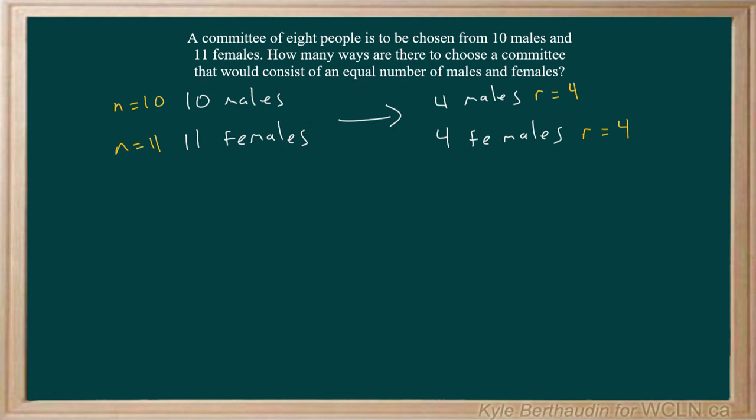Now, since we're putting together a committee that has 4 males AND 4 females, you might recognize that word AND, and hopefully it reminds you of the fundamental counting principle. If we see this AND, that means that we take the number of combinations for males and multiply it by the number of combinations for females.